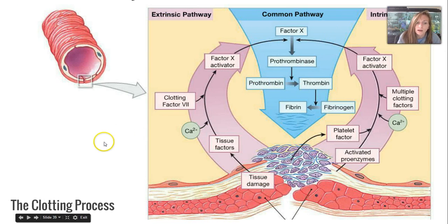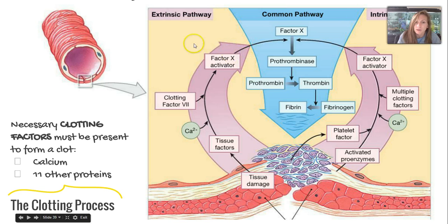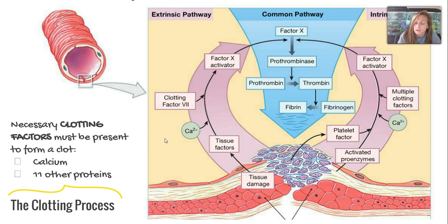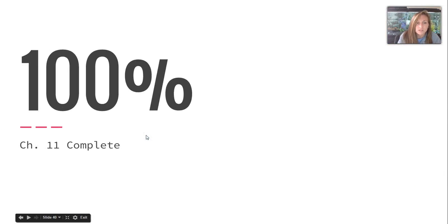The clotting process requires clotting factors to be present, including calcium and 11 other proteins. The coagulation phase has three main pathways: the extrinsic, common, and intrinsic. It is very intricate, so drawing this pathway is recommended and we will discuss more details in class. That wraps up chapter 11 — see you guys in class.